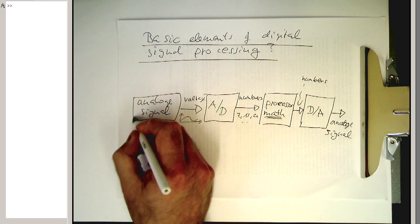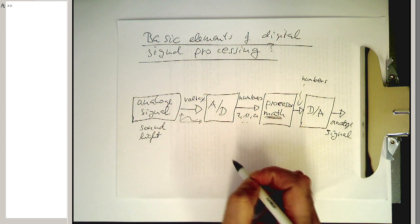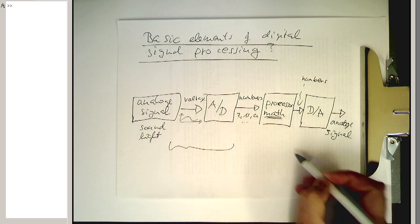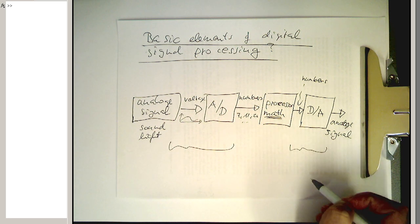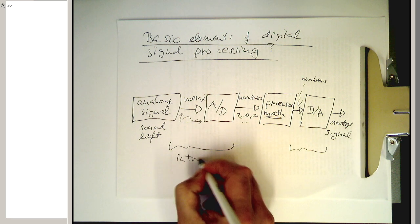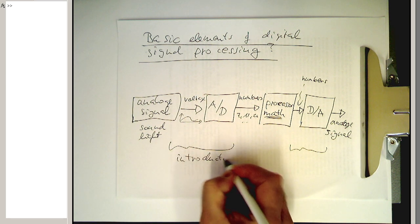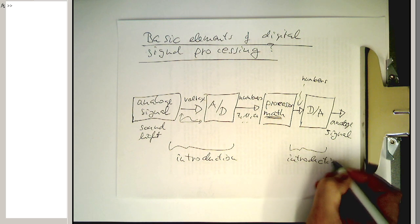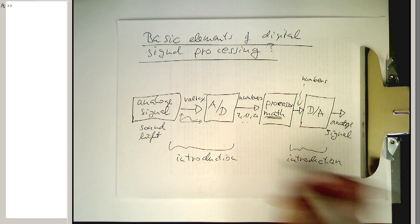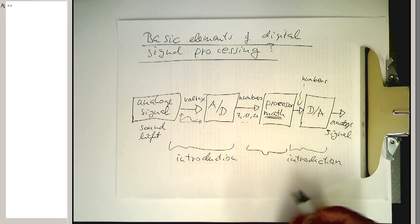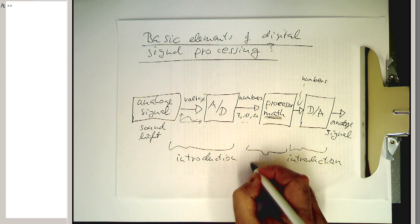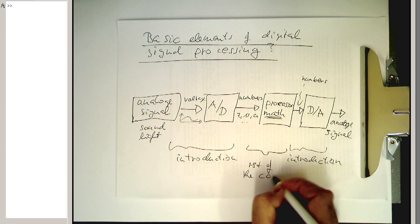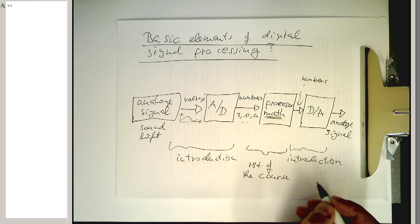So in this unit here, or in this playlist, what we're dealing with is we are dealing with this section here, and then also a bit of this section. So that's basically all part of the introduction. So this is what we're dealing now here, and this is here. So this processing, this is essentially the rest of the course. But with that we are dealing later.